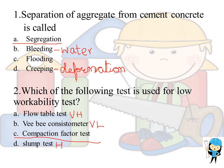The first question: separation of aggregate from the cement concrete is called segregation. Bleeding is defined as separation of water from the cement concrete. Creeping is defined as time-dependent deformation, that means the deformation that takes place with respect to time.